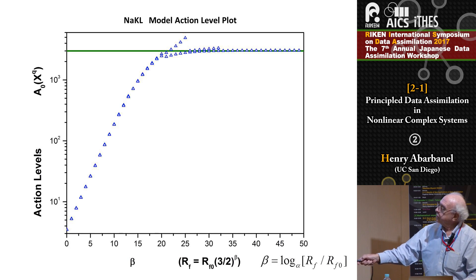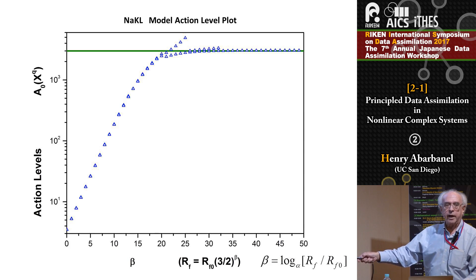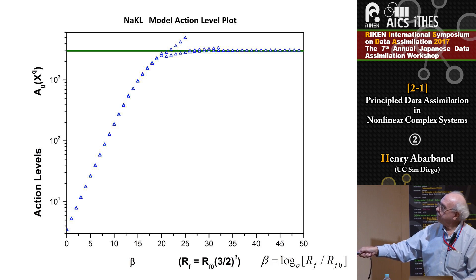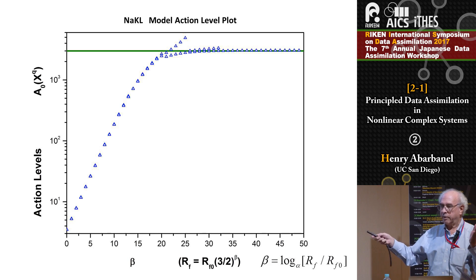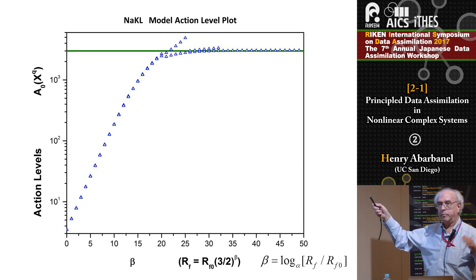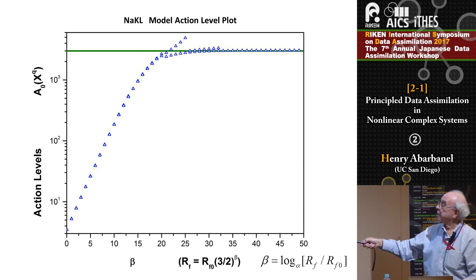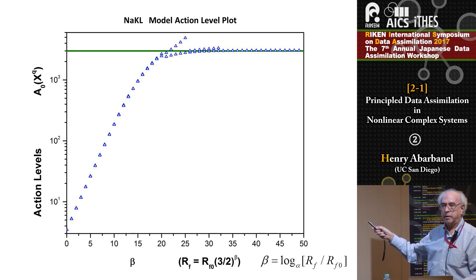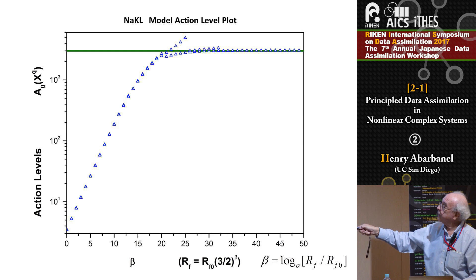We follow every one of those initial conditions, trying to stay in the minimum found at R_f equals zero, which we slowly move along toward the model itself. As R_f gets big enough — if R_f went to infinity, that would be deterministic dynamics with no model error, x equals f of x as a delta function — you can see that as R_f gets bigger, some of the action levels go off and live up high, while others come to live along a straight line, which is a consistency check on the quality of the action level.